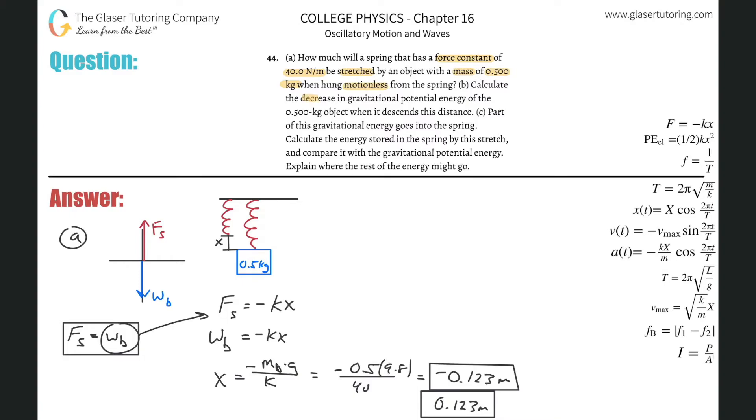So let's calculate the decrease in gravitational potential energy of the 0.5 kilogram object when it descends this distance. So now we're talking about potential energy due to gravity. So let me label this part B. And let me label this part over here, part A. So now they're talking about change in potential energy. So why don't I just start by writing that out, change in potential energy.